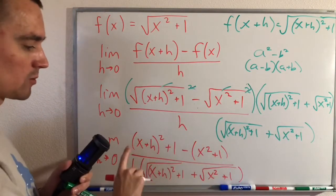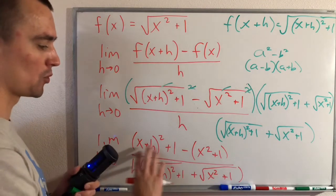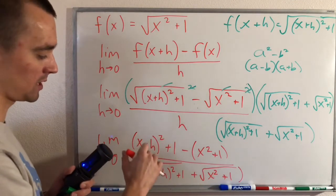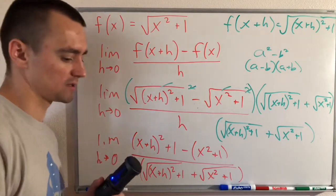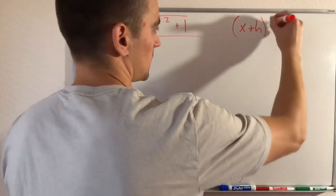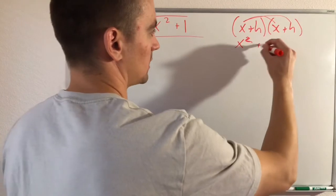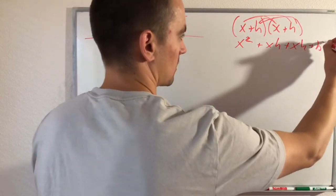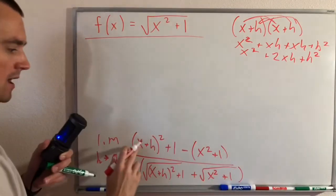This is where parentheses are important, because the minus sign has to distribute to each piece. Using the difference of squares, we've eliminated all the square roots from the numerator. Now we just have h times the conjugate in the denominator. The next step is to simplify the numerator by expanding (x+h)² — that's (x+h)(x+h) — using FOIL, and distributing the negative.